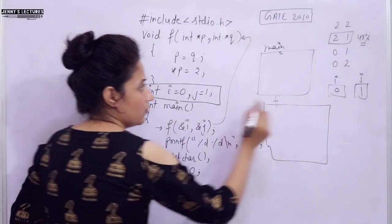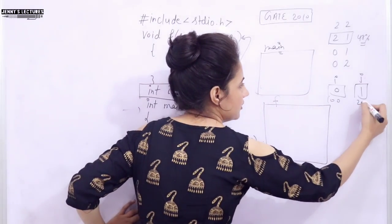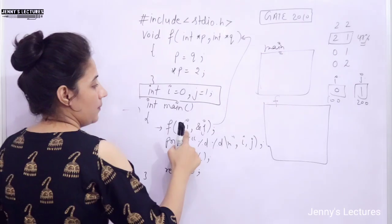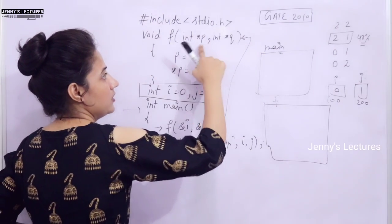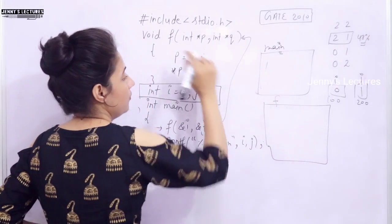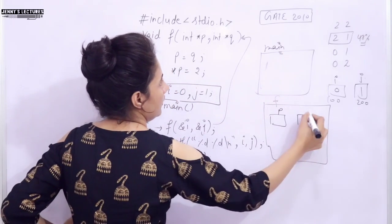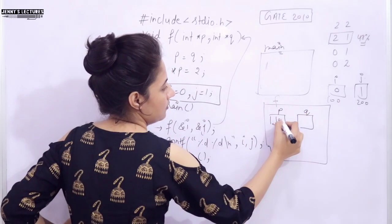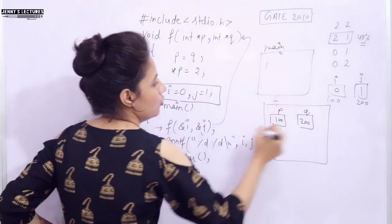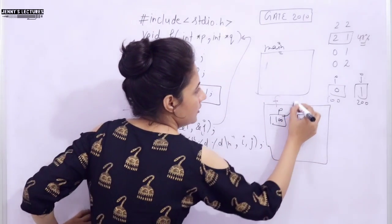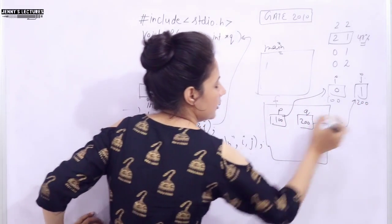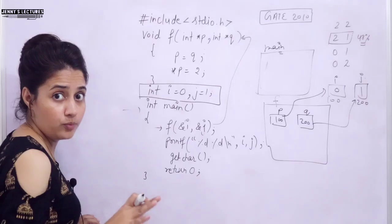Now, we are passing address of i. Suppose address of i is 100 and this is 200. We are passing 100 and 200. So here we are having some pointer, sorry not in main, in f we are having two pointers to accept these addresses, p and q. In p we are having 100 and in q we are having 200. So now this p is pointing to here, this q is pointing to here. I hope you got this.